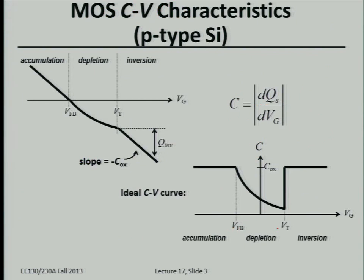The slope of charge versus voltage gives the capacitance. In accumulation and inversion, the slope is approximately constant — both give COX. In between accumulation and inversion, the slope is less steep. The classic capacitance versus gate voltage curve shows a dip in the middle. You can tell which side is inversion because there's a steeper change in small signal capacitance at threshold. Normally, the flat band voltage is negative (close to −1 V) for an NMOS capacitor with p-type silicon substrate.